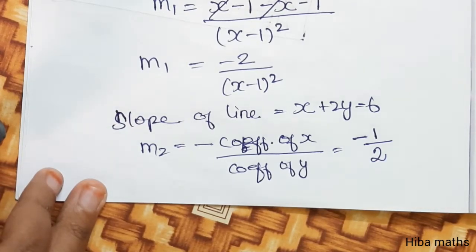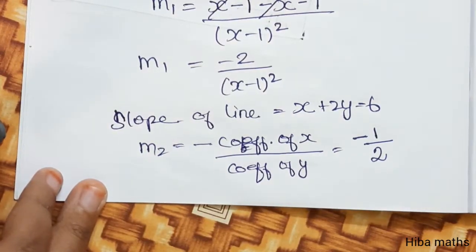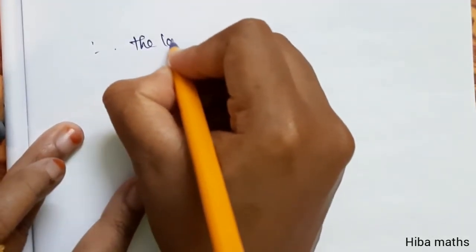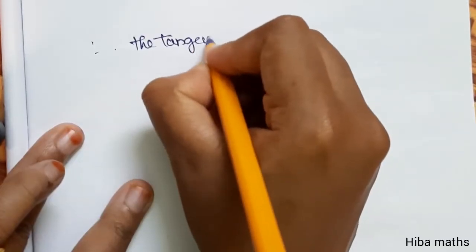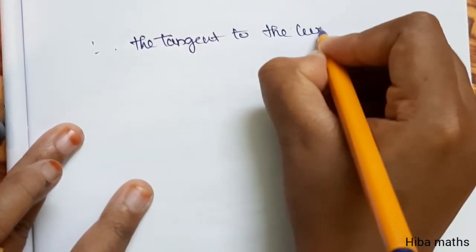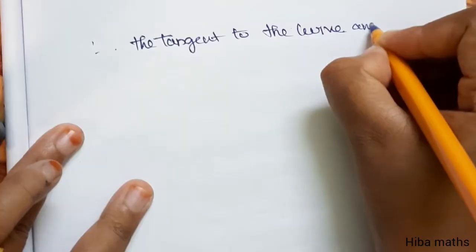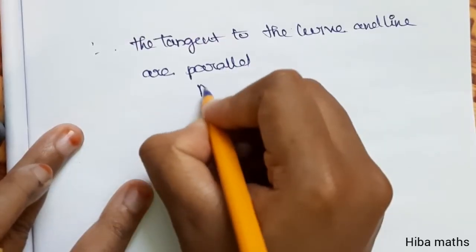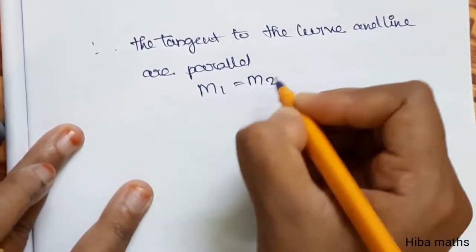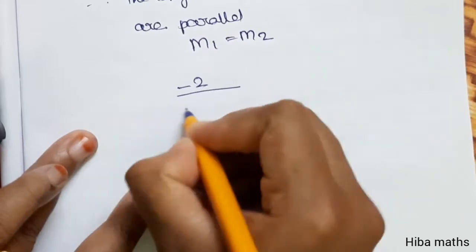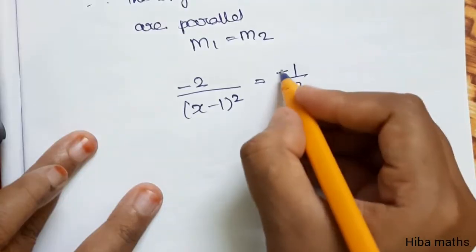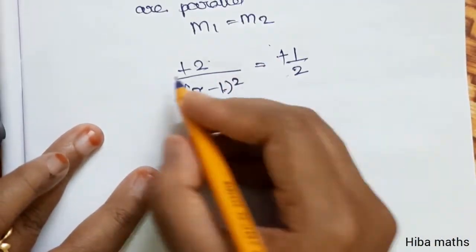The tangent to the curve and the line are parallel, so the condition is m1 equal to m2. Setting m1 equal to m2: −2/(x−1)² equals −1/2. The negatives cancel. Cross multiplying gives 2 times 2 equals (x−1)², so (x−1)² equals 4.